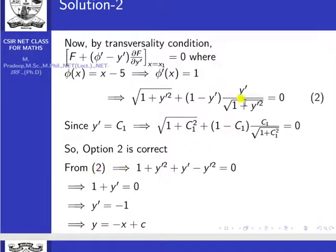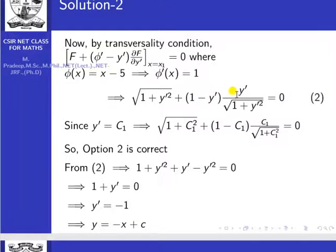From the transversality equation, taking LCM as root(1 plus y-dash squared) and multiplying through: (1 plus y-dash squared) plus y-dash times (1 minus y-dash) equals 0, which gives 1 plus y-dash squared plus y-dash minus y-dash squared equal to 0. Simplifying: 1 plus y-dash equal to 0, so y-dash equal to minus 1. Therefore y equal to minus x plus c.